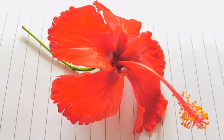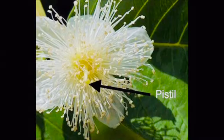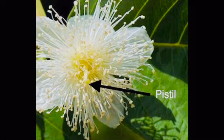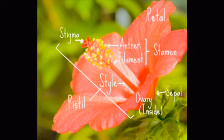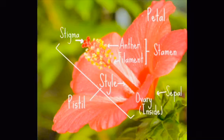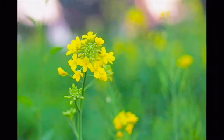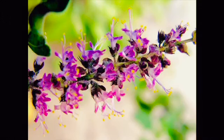Most plants possess bisexual flowers. Flowers are the reproductive parts of an angiosperm plant. Bisexual flowers means the same flower has both stamens and pistils — that is, both male and female parts are present in the same flower. Most plants belong to this category. Examples include hibiscus, mustard, tulsi (basil), and guava.